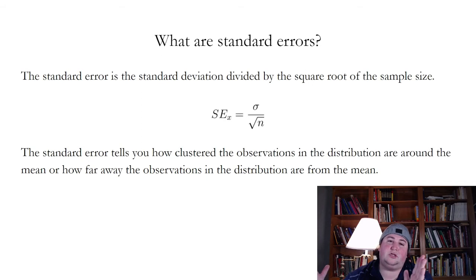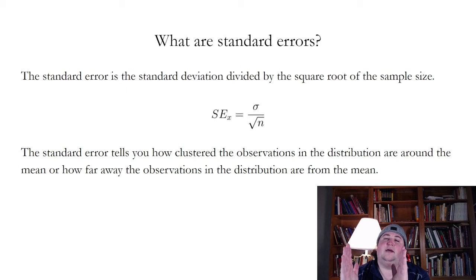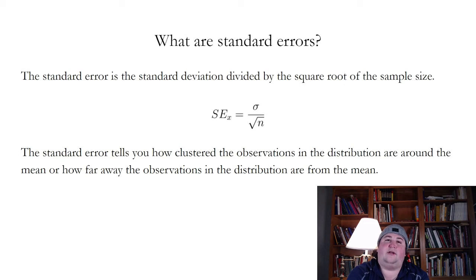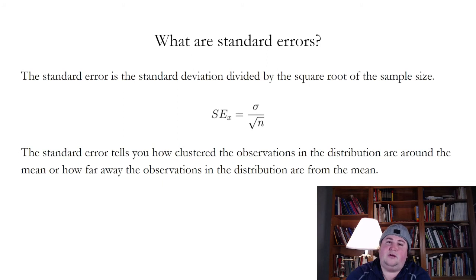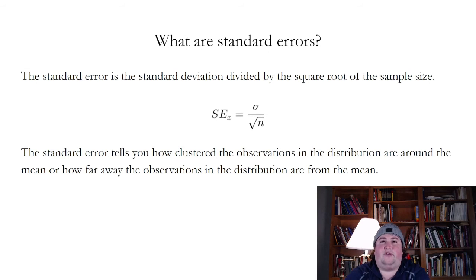If the distribution is all spread out and relatively far away from the mean, it's going to have a high standard deviation. And so if you have a lot of data points all clustered really closely around the mean, that will have a low standard error, because the standard deviation will be very small and the denominator — the square root of n, the square root of the number of observations — is going to be large. So the standard error will be small.